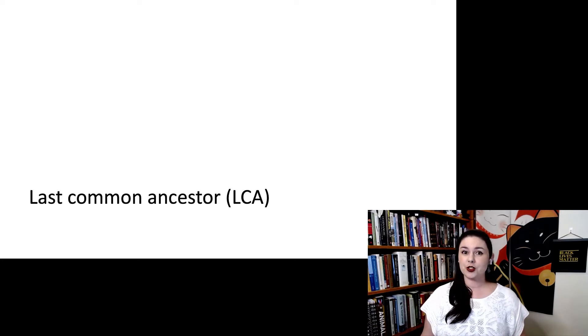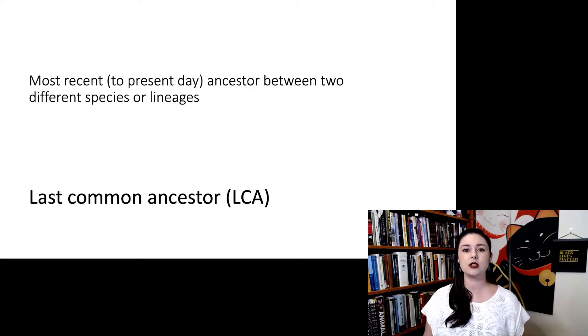You might hear this term in other places. Last common ancestor, commonly abbreviated as LCA. This just means it's the most recent to present day ancestor between two different species or lineages. So when we're talking about human evolution, we talk about the last common ancestor with chimpanzees a lot of the time. So this is the last common ancestor that us and chimpanzees share. Mostly in human evolution, we're interested in what happened after that last common ancestor, but it's also important to figure out what this last common ancestor might be like.